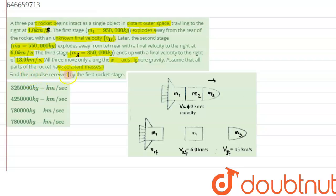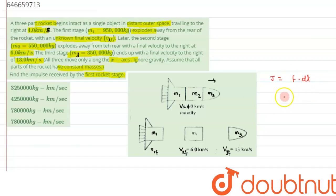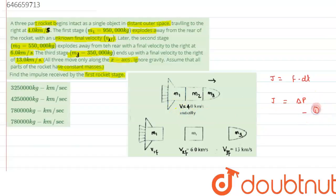We need to find the impulse received by the first stage rocket. Impulse J equals F·dt, and since F·dt is nothing but the change in momentum, we are essentially asked to calculate the change in momentum for the first stage rocket. Let's call this equation number 1.